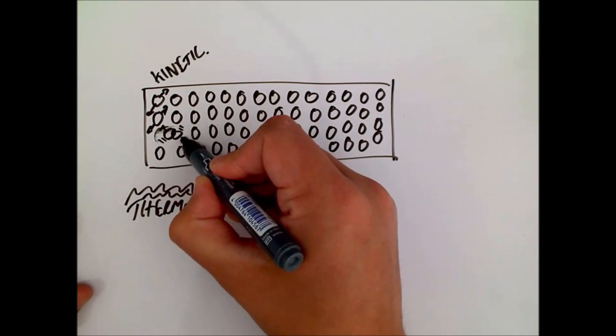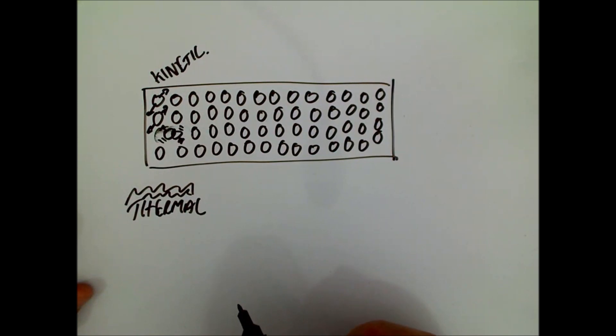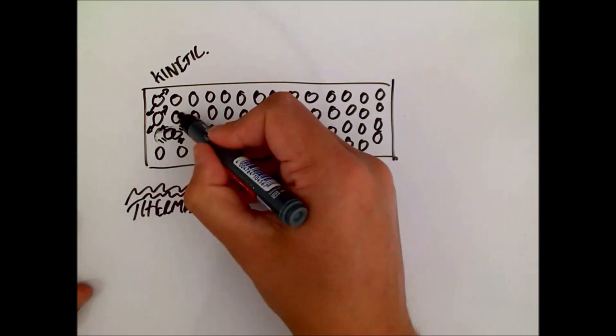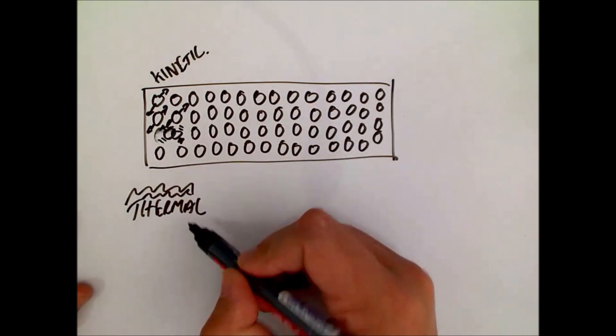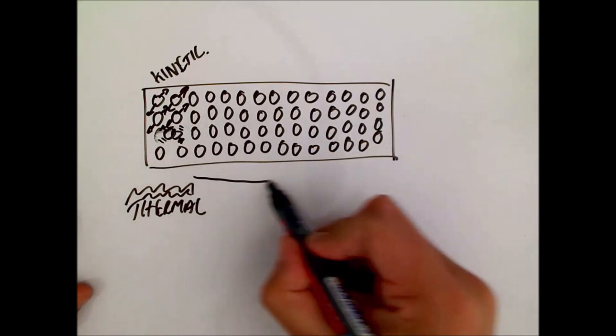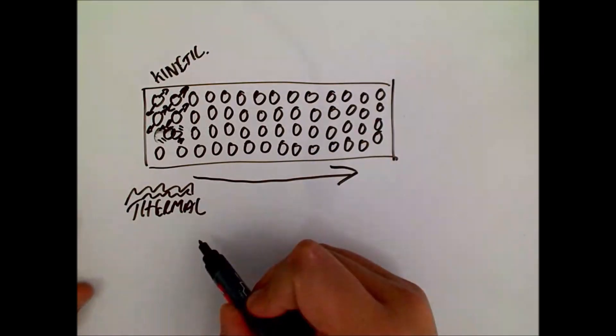So they collide. And it's that collision of the particles that transfers the kinetic energy across. So the other particles start moving. And that continues all the way down the object.